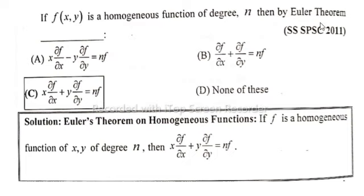of degree n, then by Euler's Theorem—the solution is Euler's Theorem on Homogeneous Functions. If f is a homogeneous function of x, y of degree n, then x(∂f/∂x) + y(∂f/∂y)